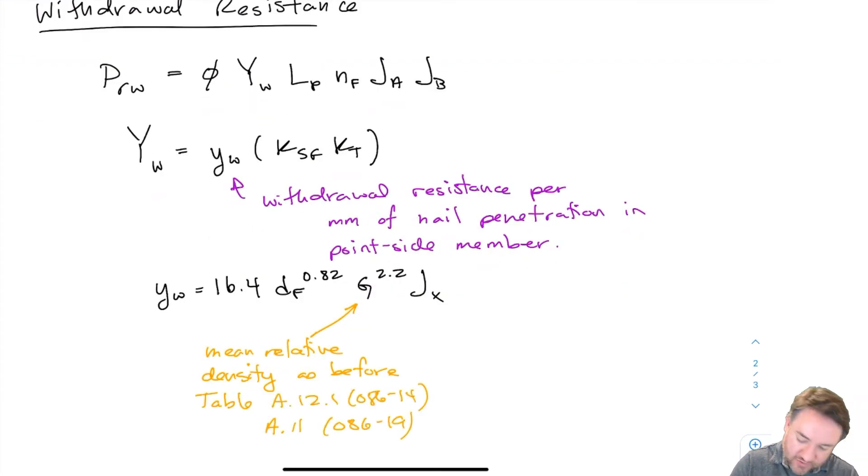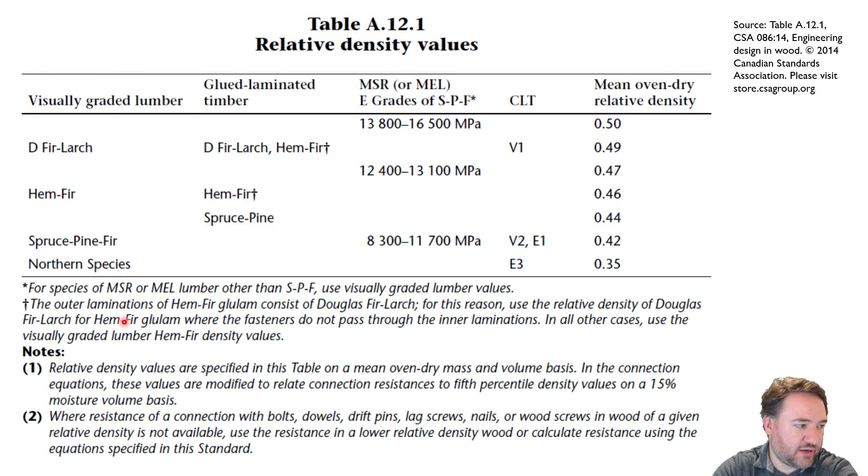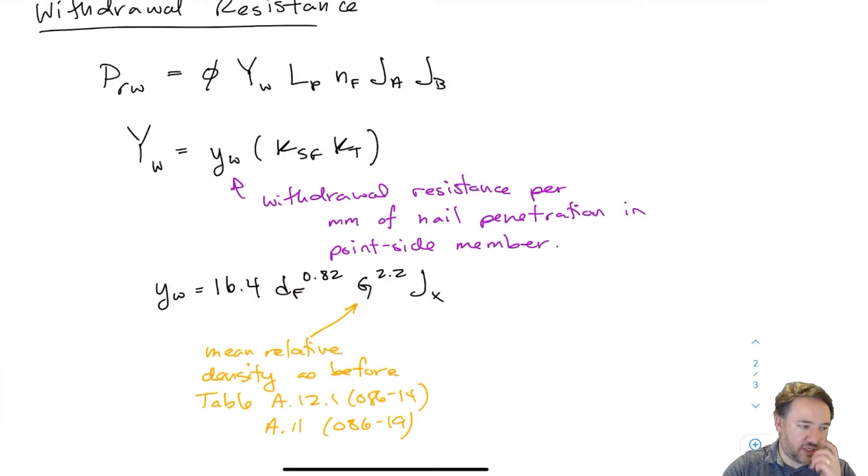And there is an empirical equation for yw that looks like this. Okay so this yw small yw withdrawal resistance per millimeter is based on the diameter of the fastener and the mean relative density which we had before when we were talking about lateral resistance. So we get that from the tables in the appendix that we talked about previously. It is this table over here which we've seen before.